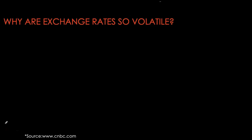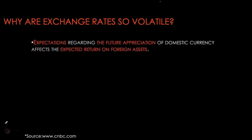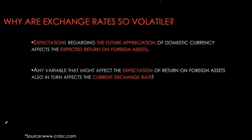The main ingredient for volatility of exchange rates is expectations about future appreciation or depreciation of the domestic currency. When the currency is expected to appreciate, it also affects the relative expected return on the foreign asset, which ends up causing the fluctuations in the exchange rate that we see. These expectations can come from a whole plethora of variables — pretty much any variable in our macroeconomy. If it's expected to change, it can end up affecting the expectation of the relative expected return on our dollar asset, and as that changes, it affects the current exchange rate today.